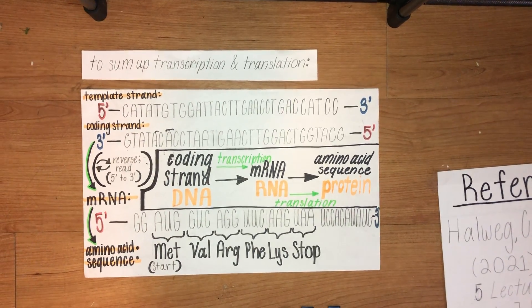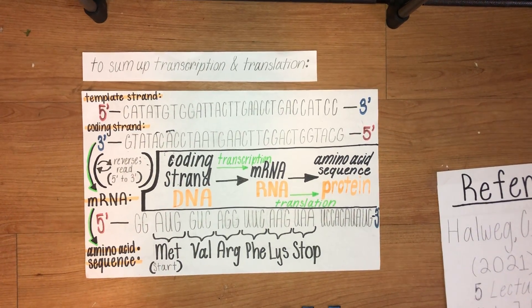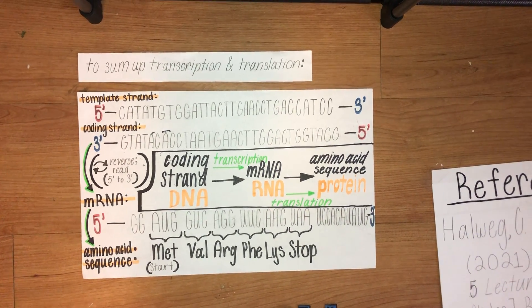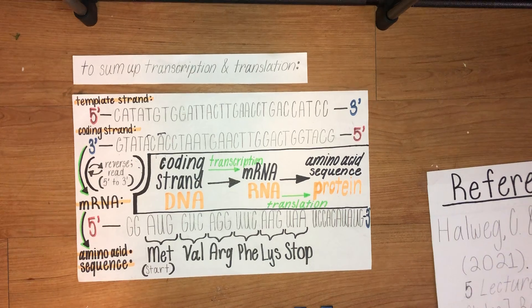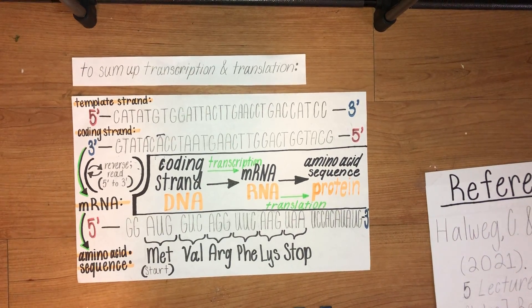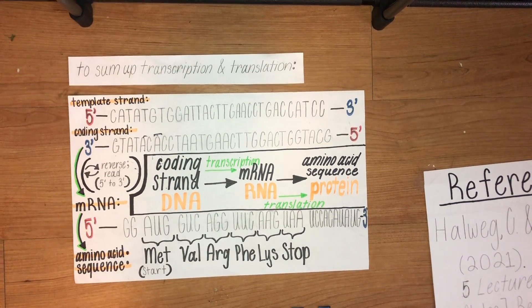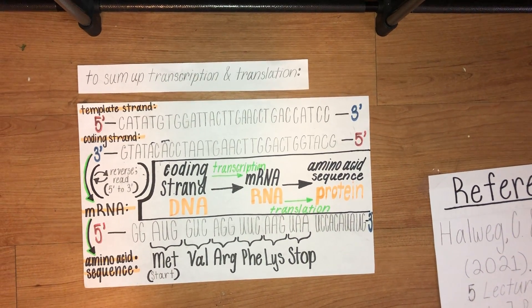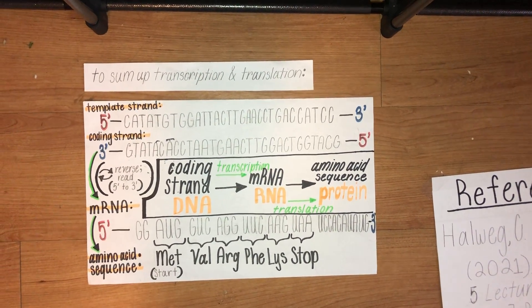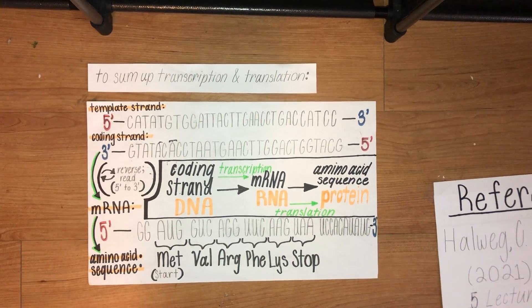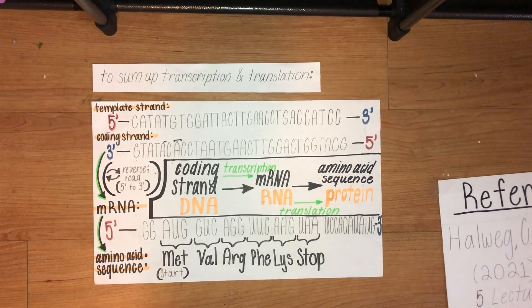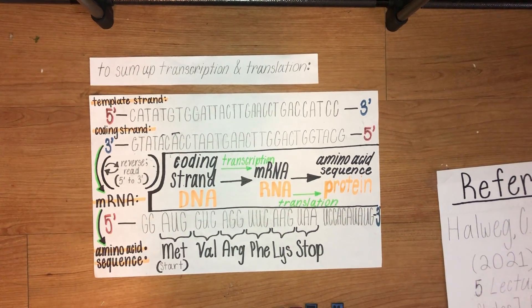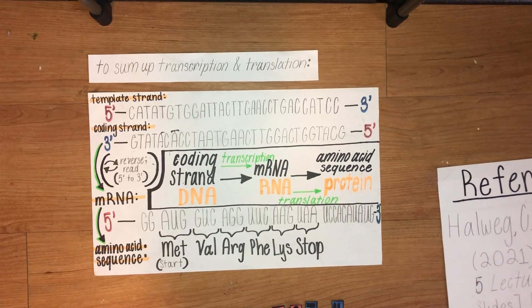Today we will be seeking to understand how we develop our products of transcription and translation from a coding and template stranded DNA. We also will be looking to understand the different kinds of single point nucleic acid mutations. Before we look at mutations, first we will look at an infographic to sum up transcription and translation.